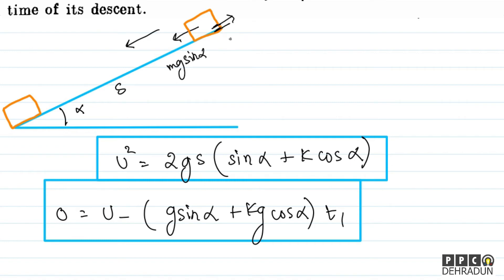Kinetic friction acts up the incline with magnitude k·mg cos alpha. So this time the acceleration becomes g(sin alpha minus k cos alpha), directed down the incline.